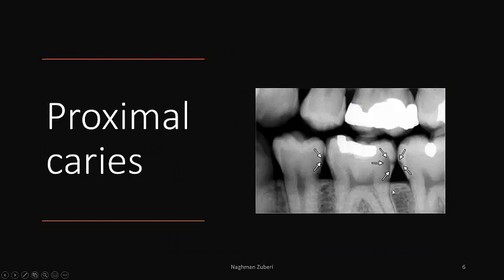Now, the difference between proximal caries and cervical caries: proximal caries will always be present in the enamel, whereas cervical caries and cervical burnout will be apical to the cementoenamel junction. These proximal caries, if they are only present in enamel, will give the appearance of a triangle whose base is towards the outer side and whose apex is towards the dentinoenamel junction.